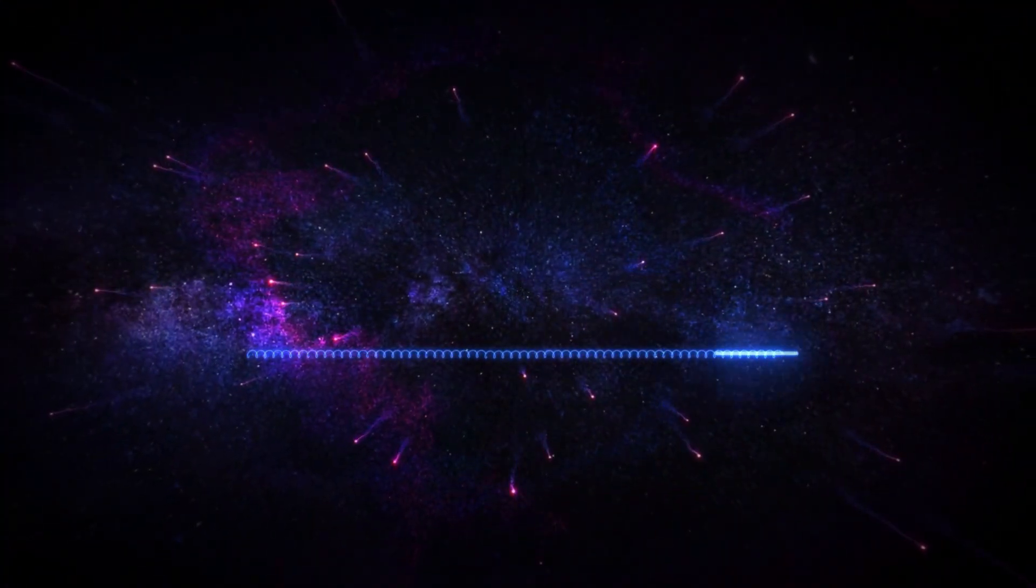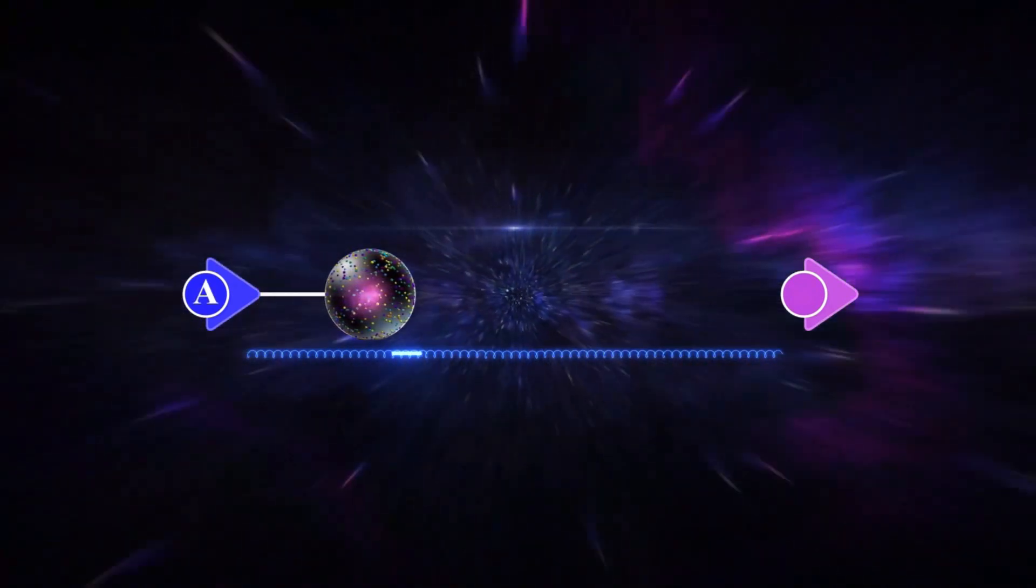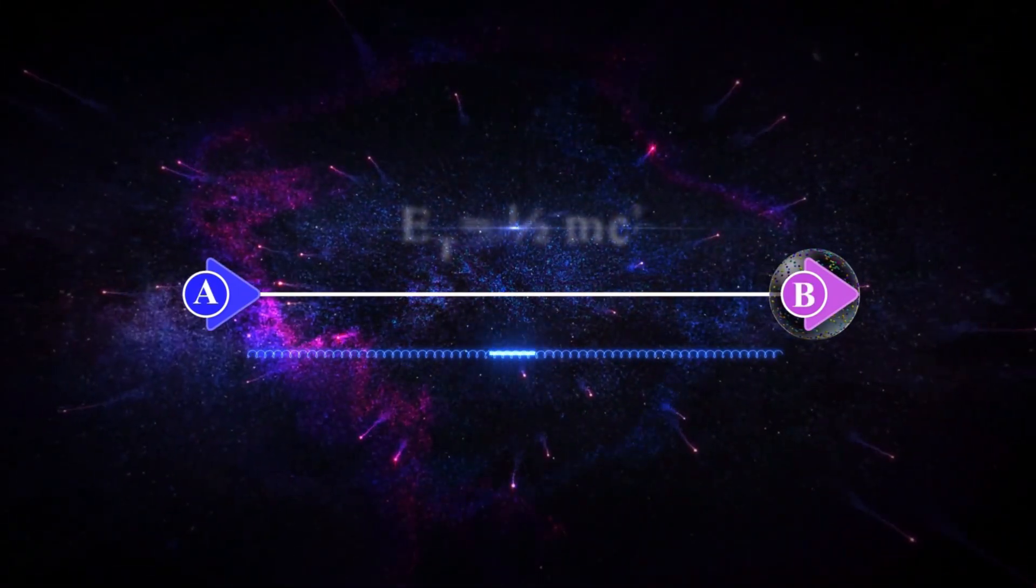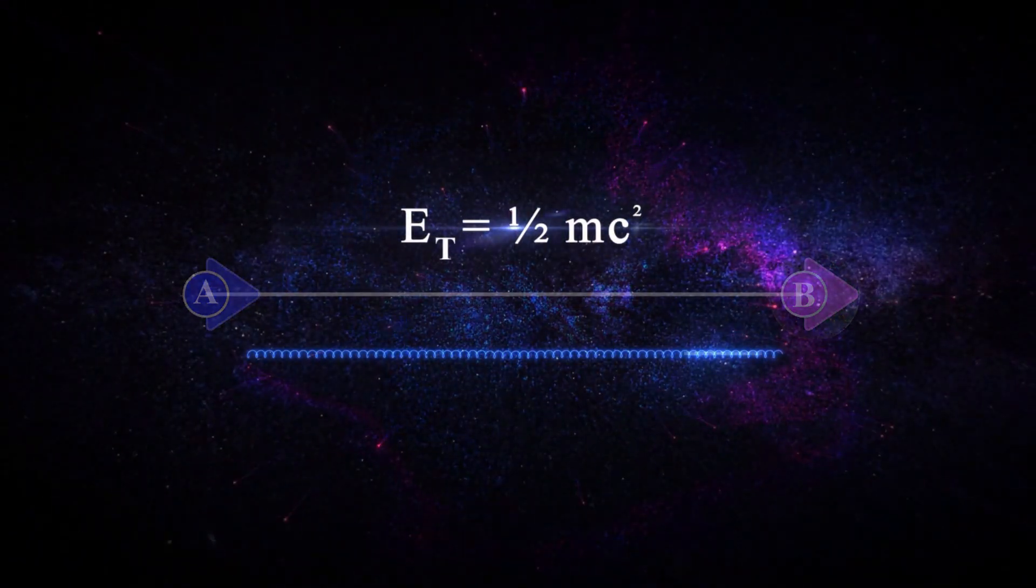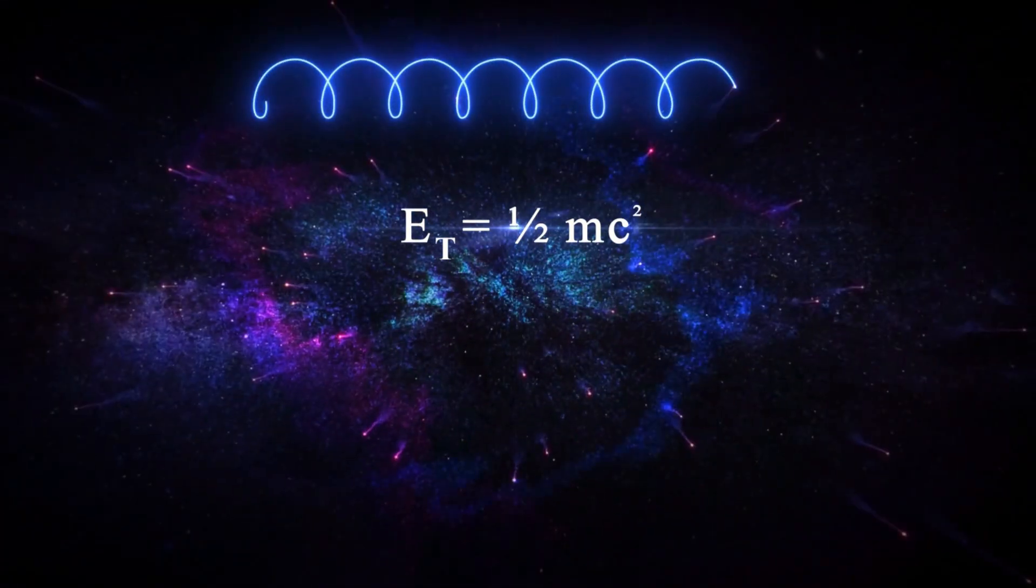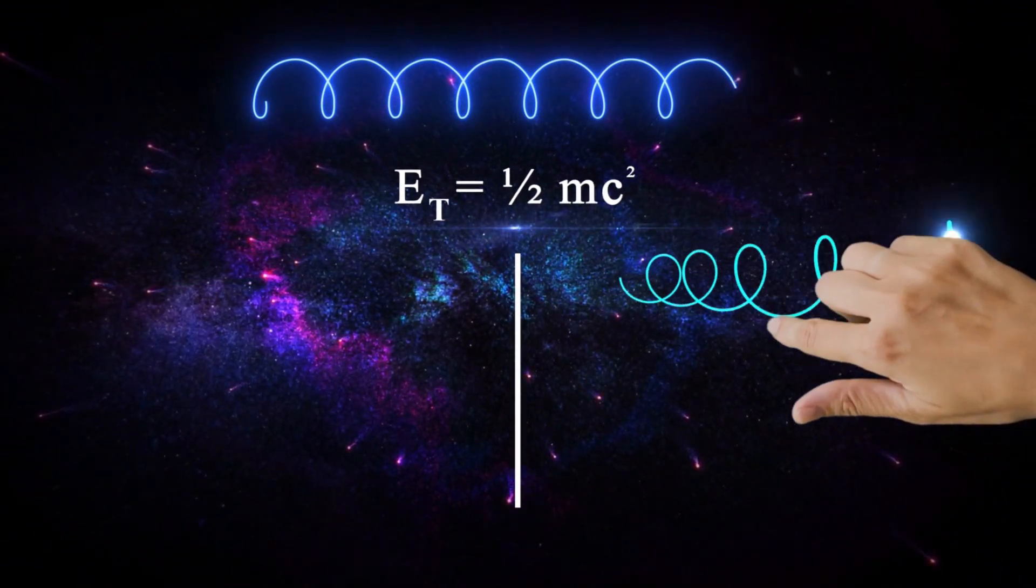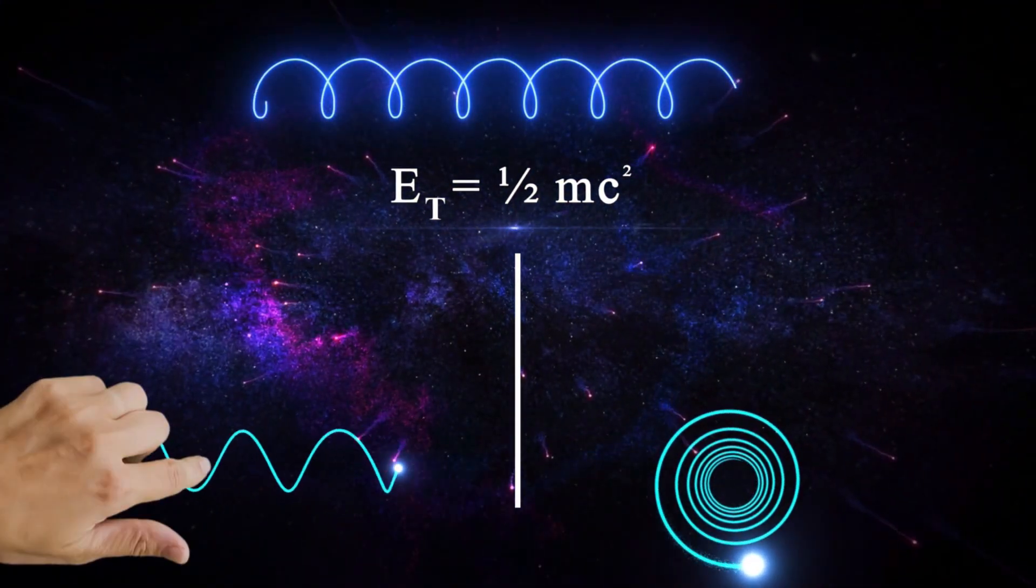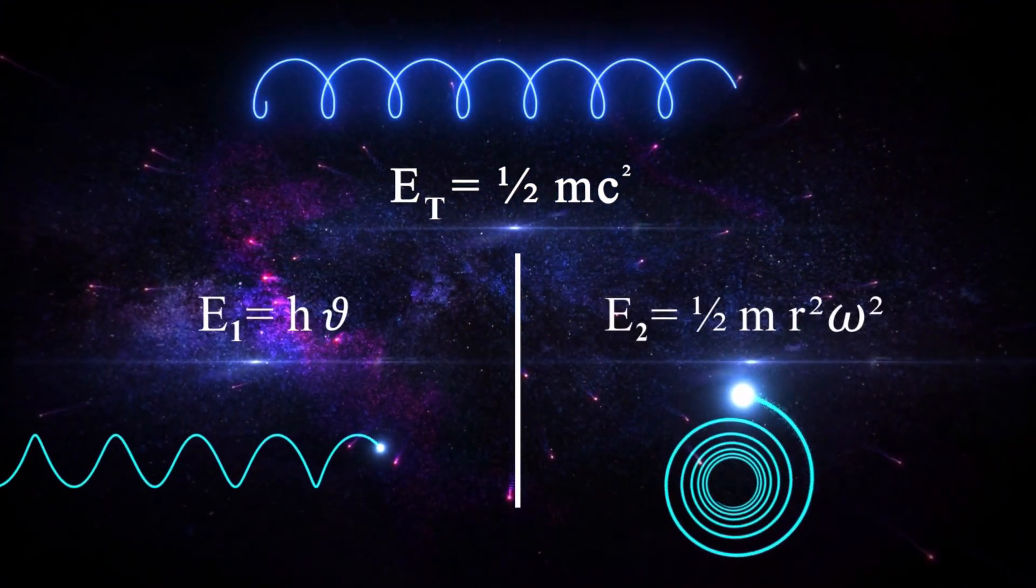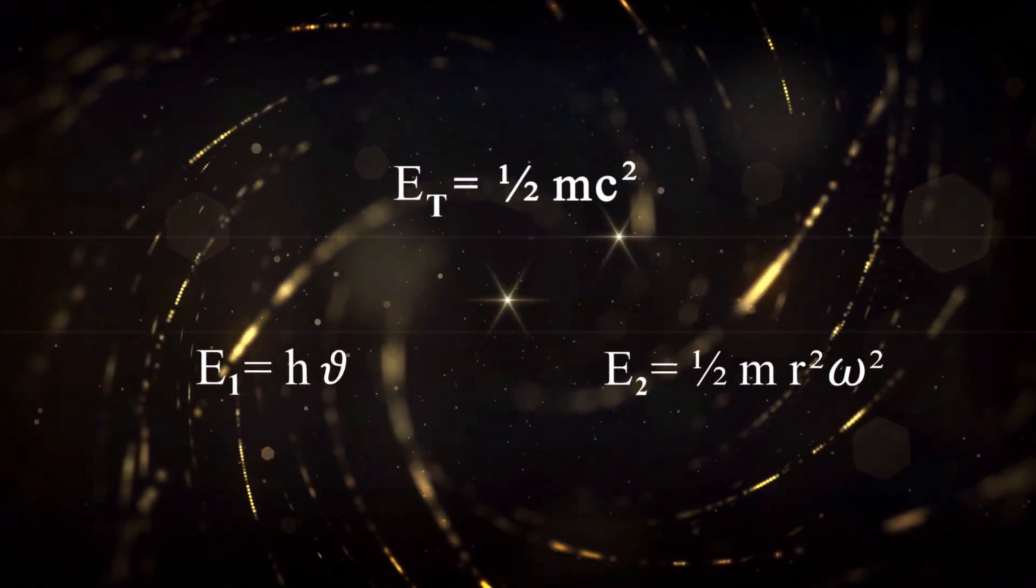But eventually, this photon with constant mass passes the distance between two points by linear velocity c, so its energy is equal to a half mc squared. According to the explanation of how the photon is moving, the final formula for the energy of the photon would be like this.